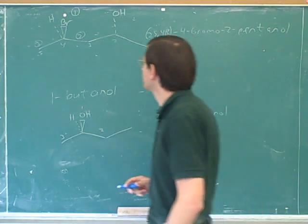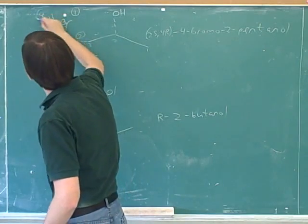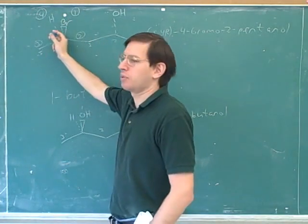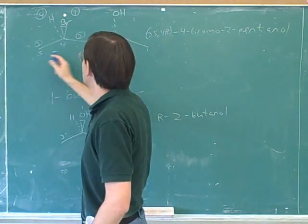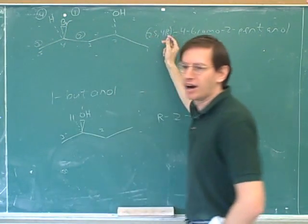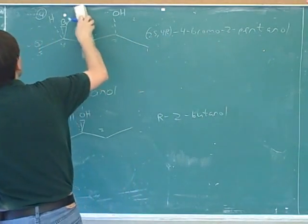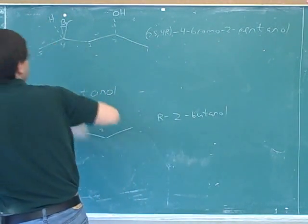Okay, let's check that. I think you're on the right track there now. So priorities 1, 2, 3, and 4. Now the hydrogen here is already pointing away from us, so we can simply see that 1, 2, and 3 are arranged clockwise. So you're right, 4R. That's correct, 4R.